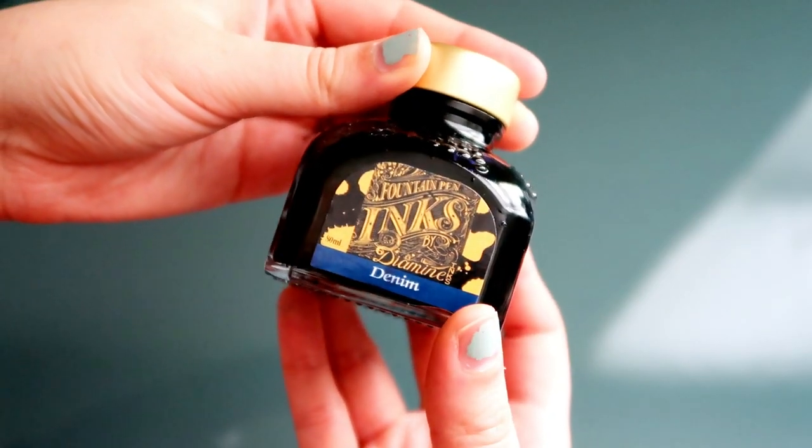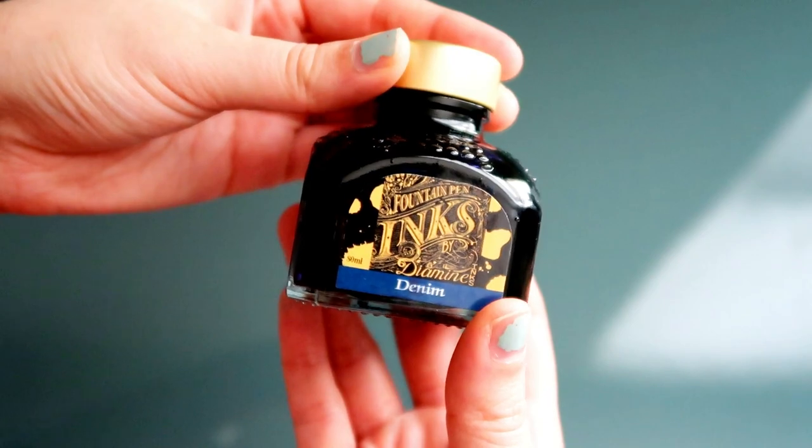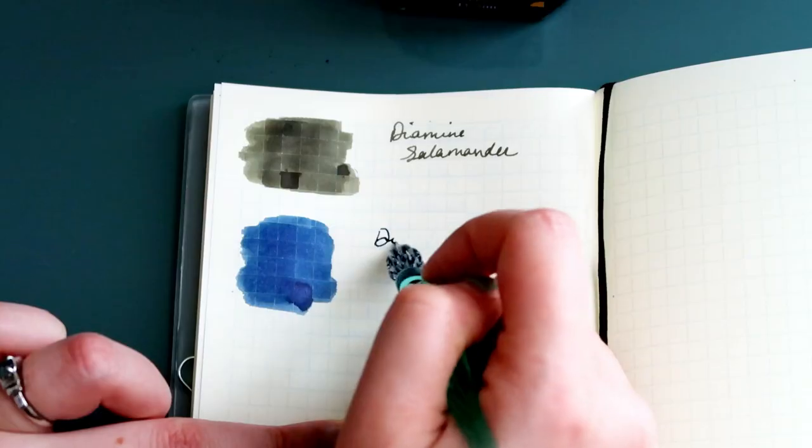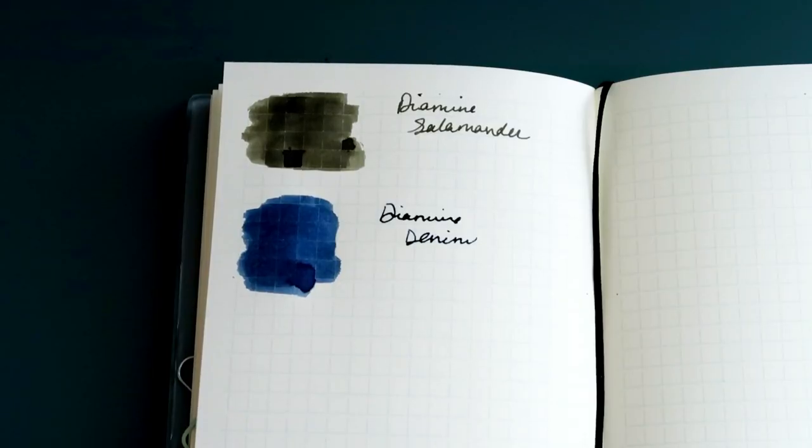Next up is Diamine ink in Denim. This is a nice blue ink, darker when you write with it, but here in the swatch it looks a lot lighter.